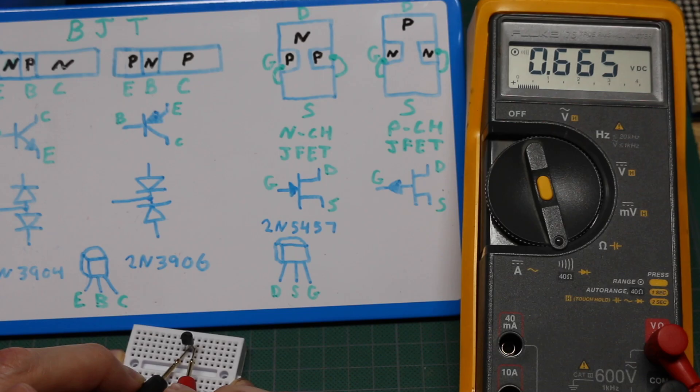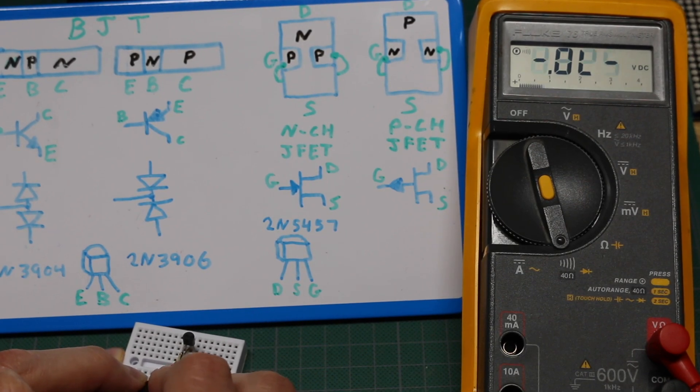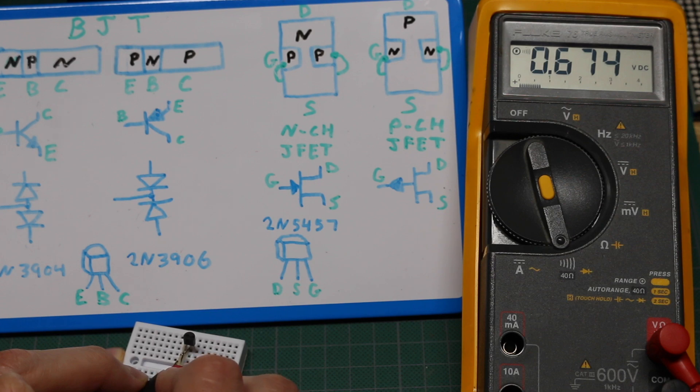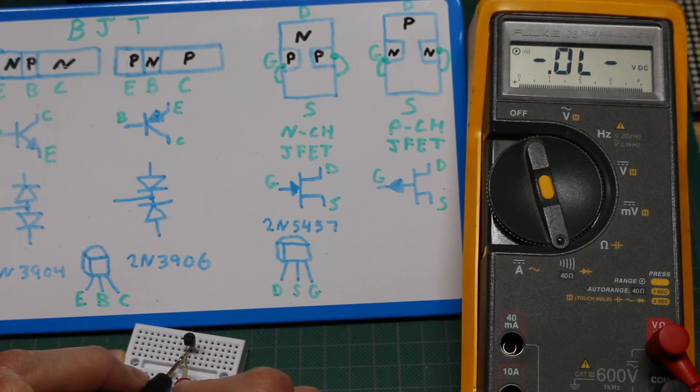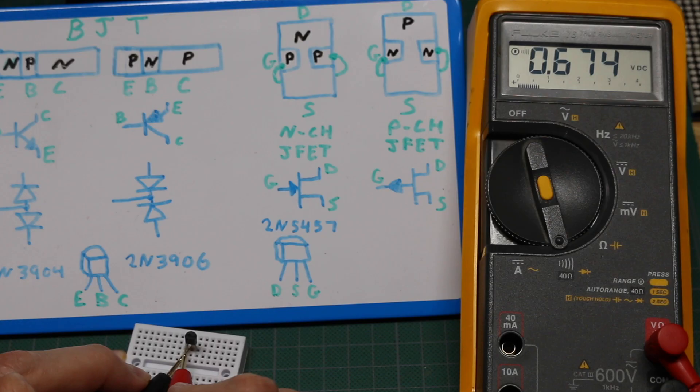So now keeping the negative on the center, bring the positive to the left and that's our other diode drop. So we know the base is in the middle, so on the right 0.66, on the left 0.67. That's greater.